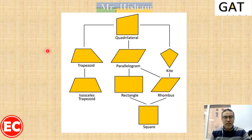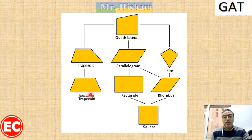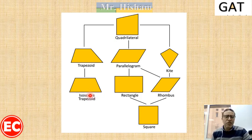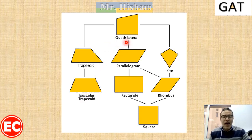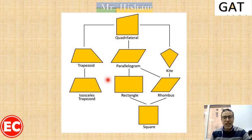Any shape formed from four sides is called a quadrilateral. If two sides are parallel, we call it a trapezium. If two sides are parallel and the other two sides are equal, it is called an isosceles trapezium or trapezoid. If each pair of opposite sides are parallel, it is a parallelogram. The parallelogram can be a rectangle, rhombus, or square. For a special case, we have something called a kite.